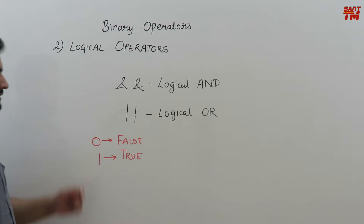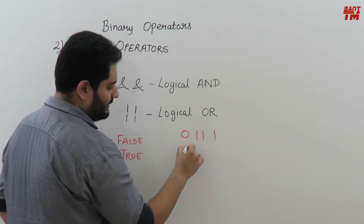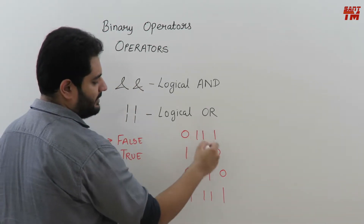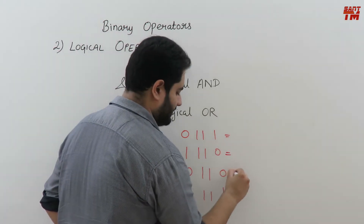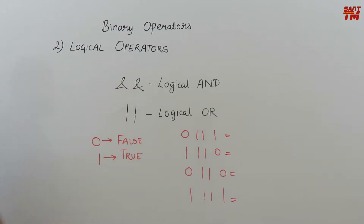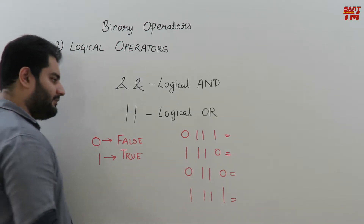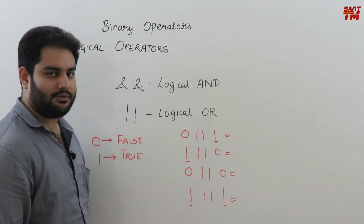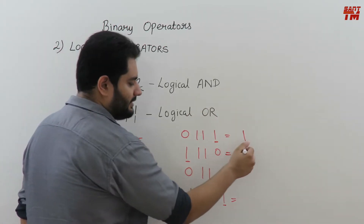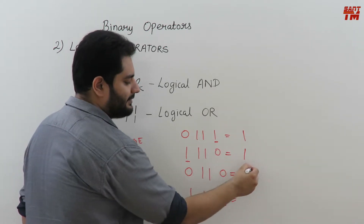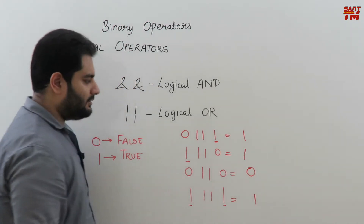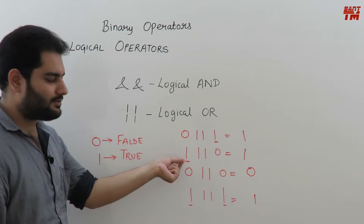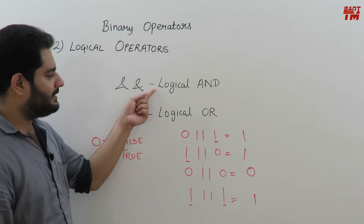For logical OR: 0 OR 1 gives true, 1 OR 0 gives true, 0 OR 0 gives false, and 1 OR 1 gives true. Unlike logical AND where both values must be true to get a true result, logical OR returns true when even one value is true. Only when both values are false will it return false. The key difference is: AND requires both true, OR requires at least one true.